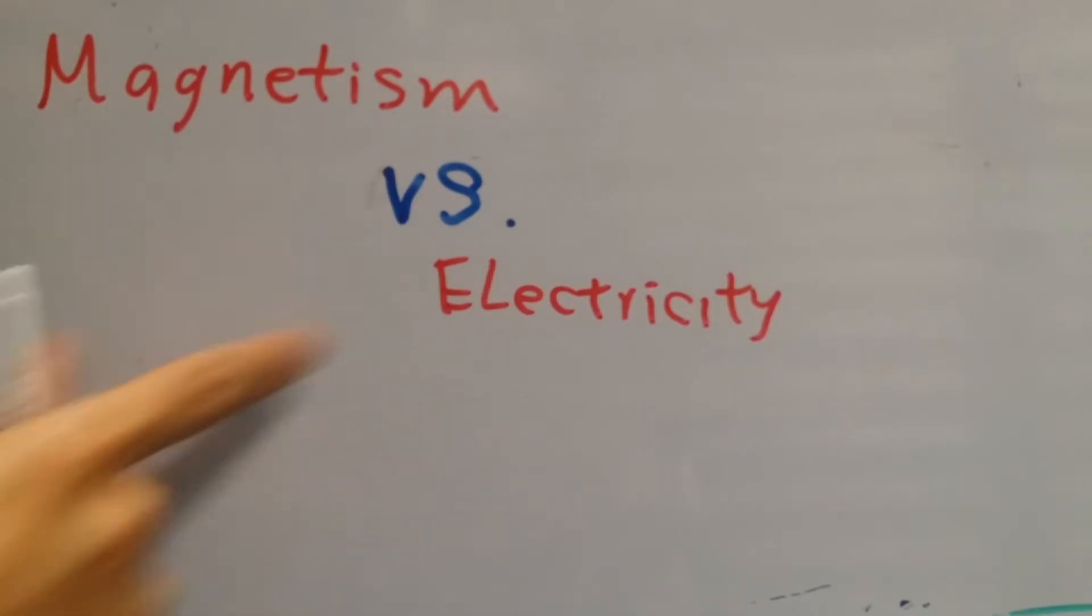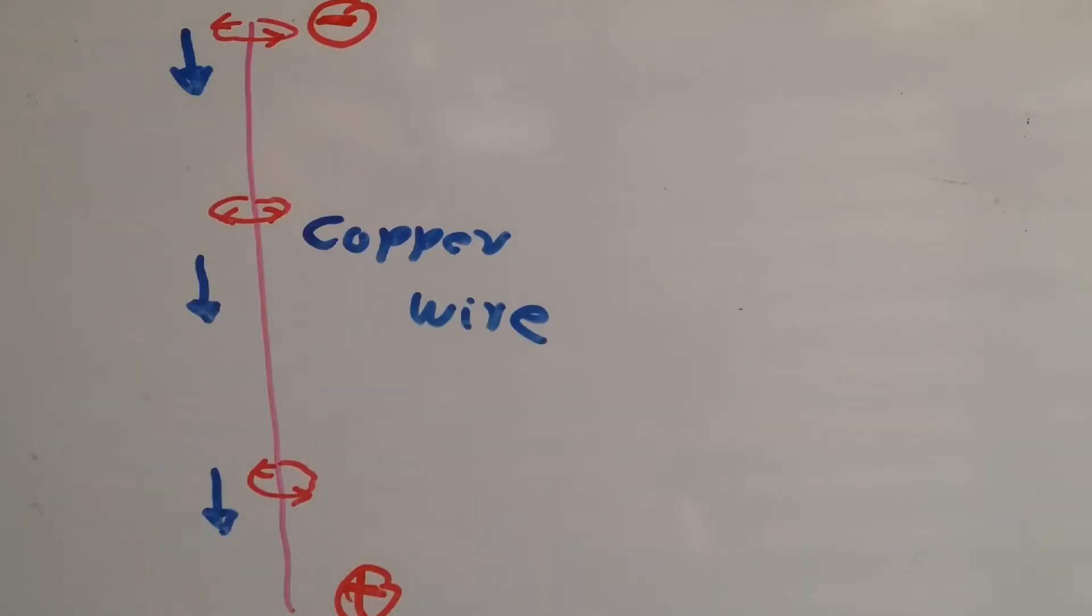Magnetism and electricity are closely related. As electrons flow through a piece of wire, they do create a magnetic field around the copper wire.